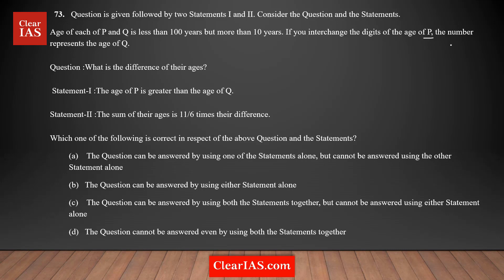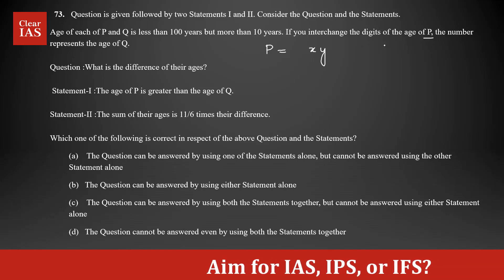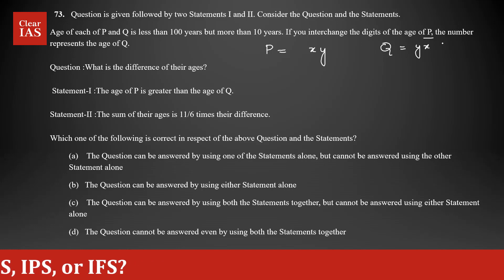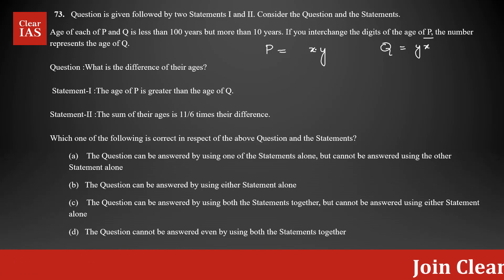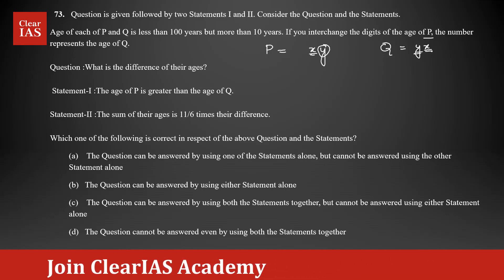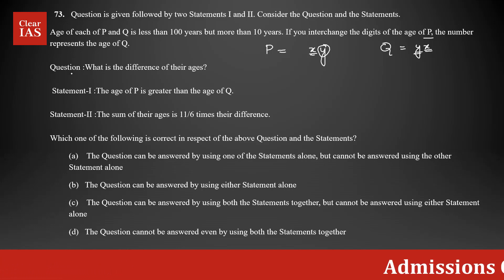I'm going to assume the age of P is a two-digit number represented as XY, where Y is the units digit and X is the tens digit. If you interchange the digits, the value of Q is going to be YX — the tens place becomes the units place and the units place Y becomes the tens place.